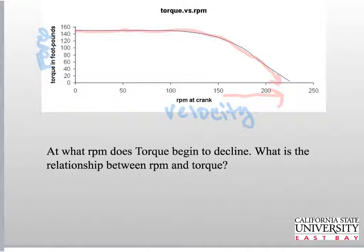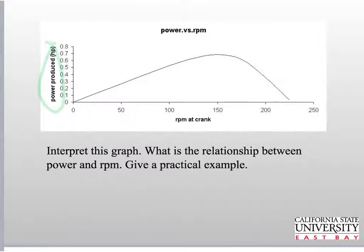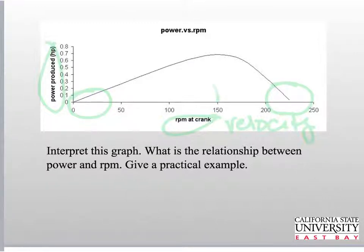To get power, we multiply force times velocity. At zero velocity with a high force, power is zero. As we work through that relationship, it becomes a curve — and that is your power curve. Power is on the Y-axis, RPMs or velocity on the X-axis. We see that high power is not at slow velocities, and you don't get high power at really high velocities, but you get your max power somewhere in the mid-range velocity.